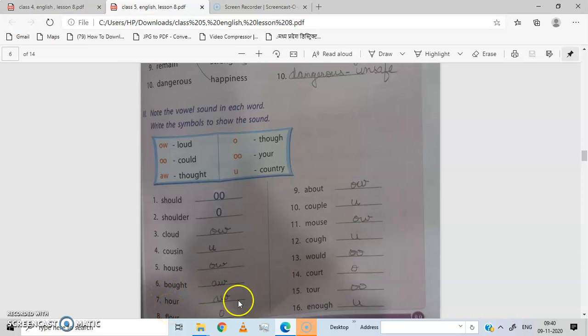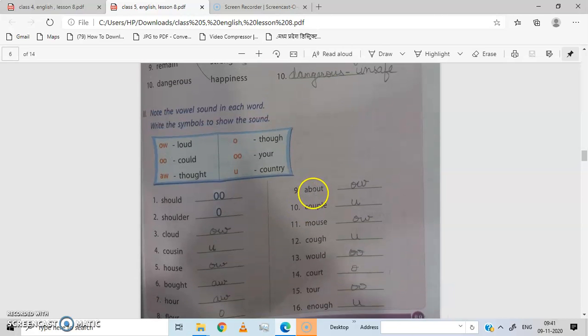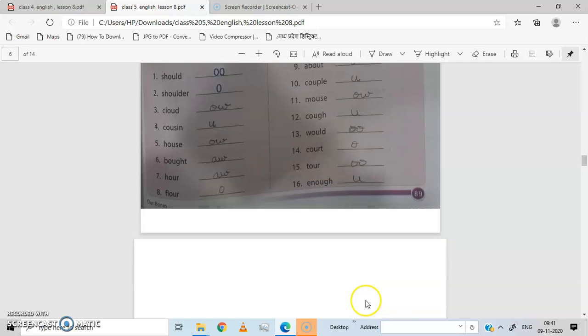Floor has O sound. About has ow sound. Couple has U sound. Mouse has ow sound. Cuff has U sound. Would has O sound. Court has O sound. Tour has O sound. Enough has U sound. Okay, in this way we have to do the exercise.